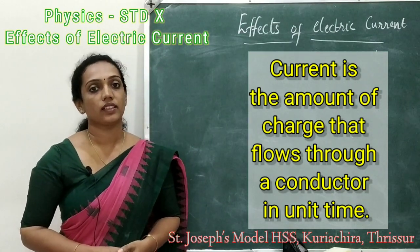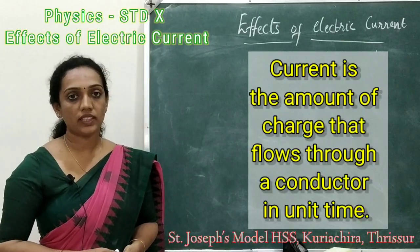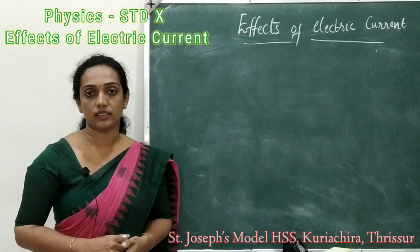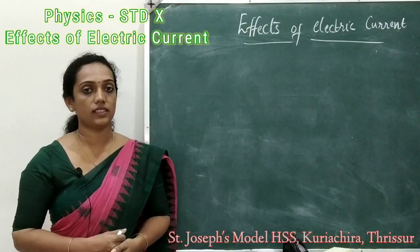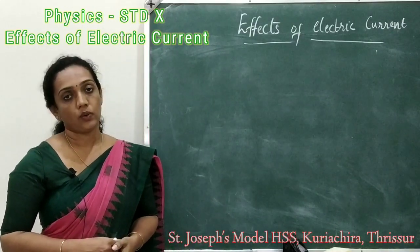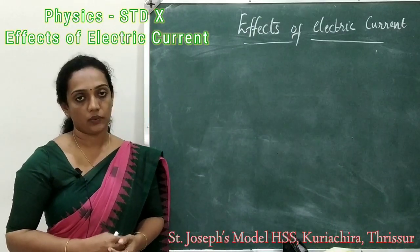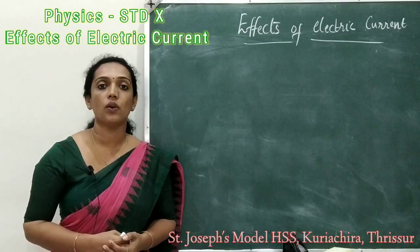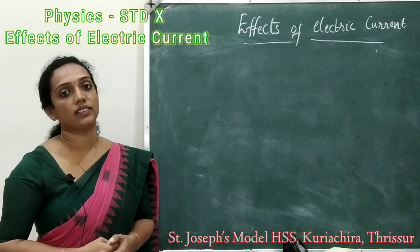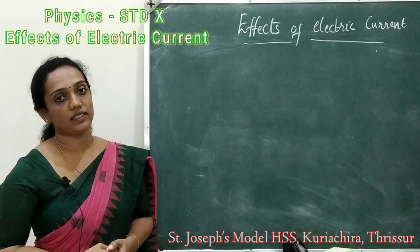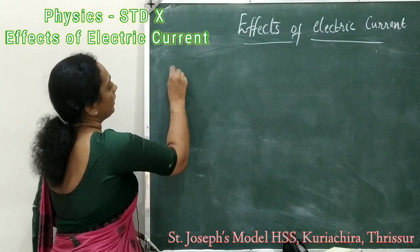Current is the amount of charge that flows through a conductor in unit time. What is a conductor? A conductor is a material that allows electricity to pass through it. Almost all metals are good conductors of electricity — for example, silver, gold, copper, aluminium, etc. are good conductors of electricity.